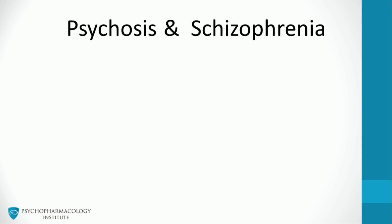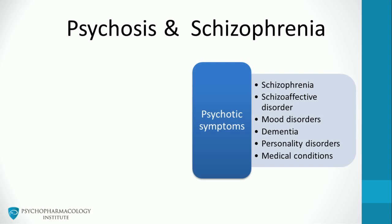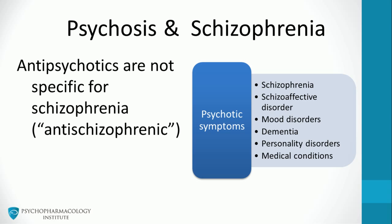Psychotic symptoms can be a feature of a number of conditions, including schizophrenia, schizoaffective disorder, mood disorders, dementia, personality disorders, and medical conditions. Antipsychotics are not specific for schizophrenia or anti-schizophrenic — they are effective in many conditions in which psychotic symptoms are present, and they don't specifically treat underlying illnesses.